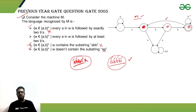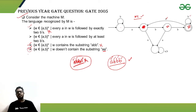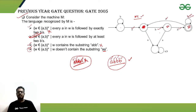Option D says: w does not contain substring 'aa'. The string 'abba' has no 'aa' substring, yet it's still rejected by the automata, so option D is also incorrect. That leaves only option B, which is the correct answer: every 'a' in w should be followed by at least two b's. After those two b's, any number of additional b's can follow, and the string will still be accepted.